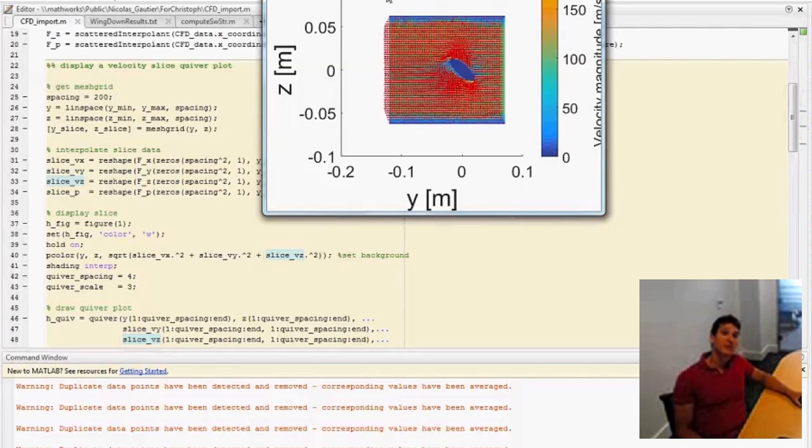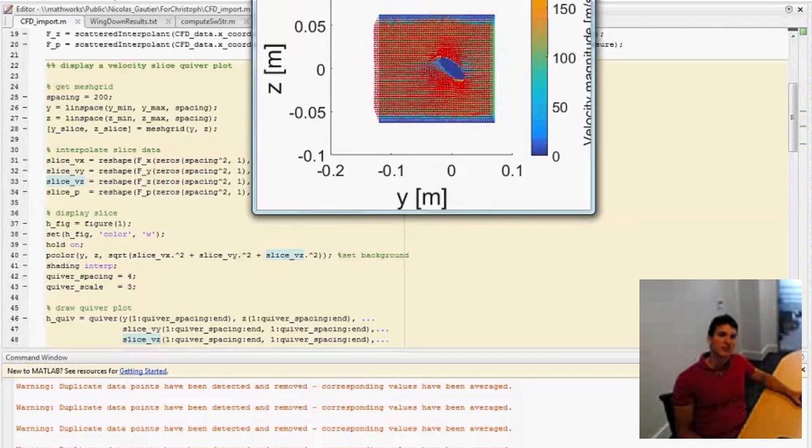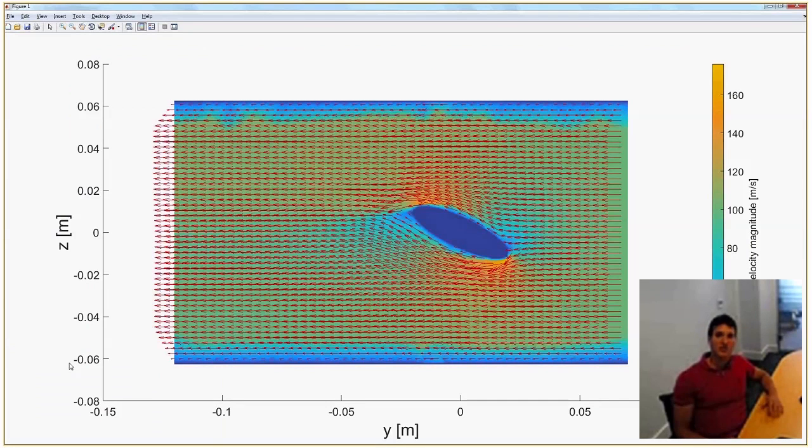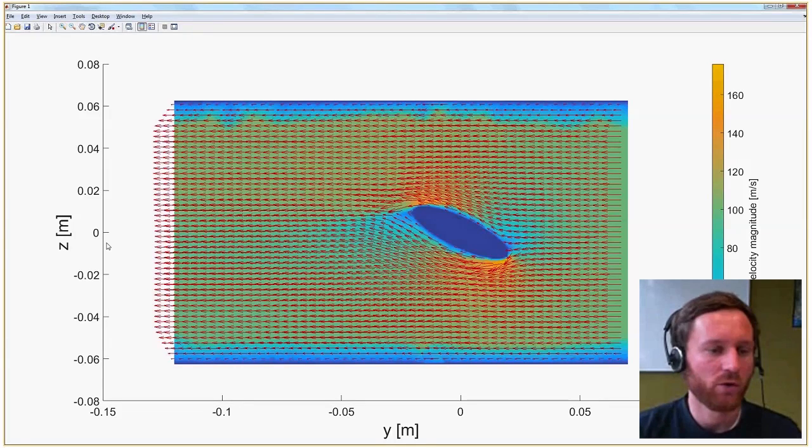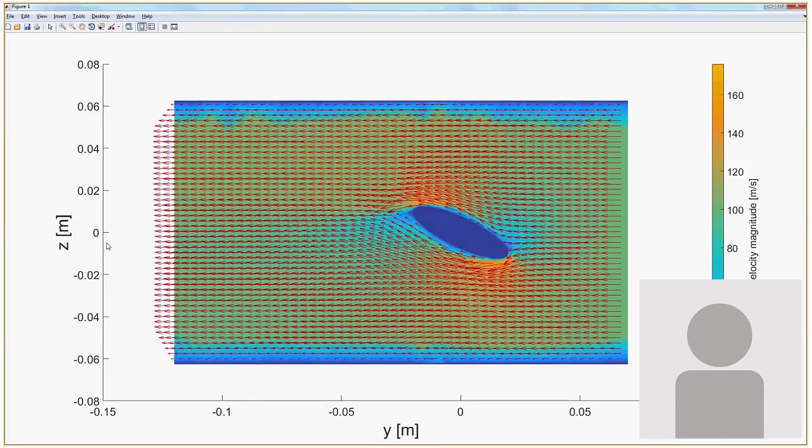Then we will interpolate the data, and this is where we use the scattered interpolant. We use a reshape to get to the matrix, and then we will display the slice. Let me just run this section of code here. You can see it's quite fast even though a fair number of interpolations were done. What we have - we see this YZ slice showing velocity magnitude in color here. For example, you have the wing in the middle, so the top of the wing and bottom of the wing you have regions of high velocity magnitude as you would expect, and low velocity magnitude behind the wing. We've also overlaid the quiver plot showing the direction and magnitude of the velocity at each point.